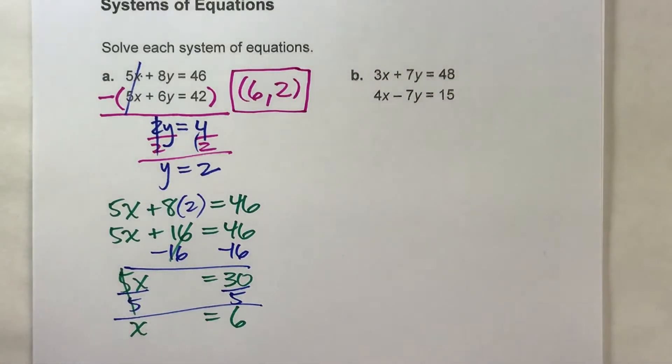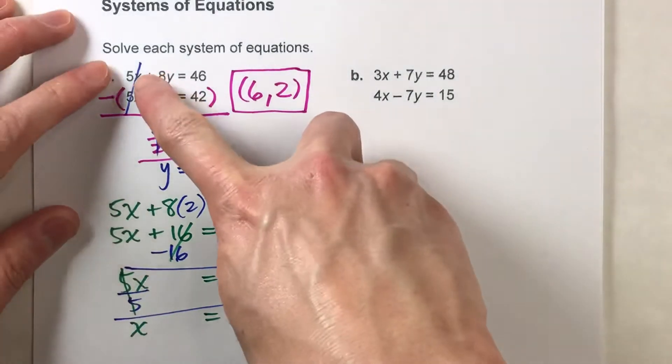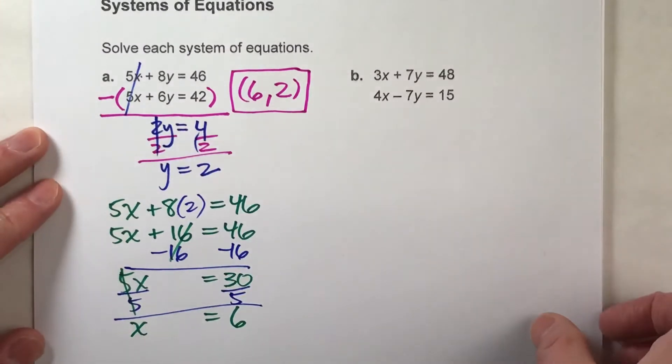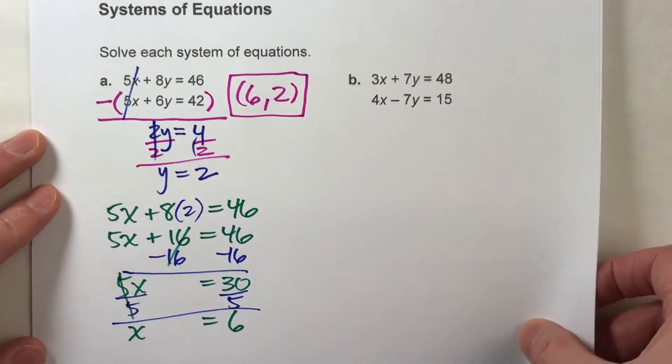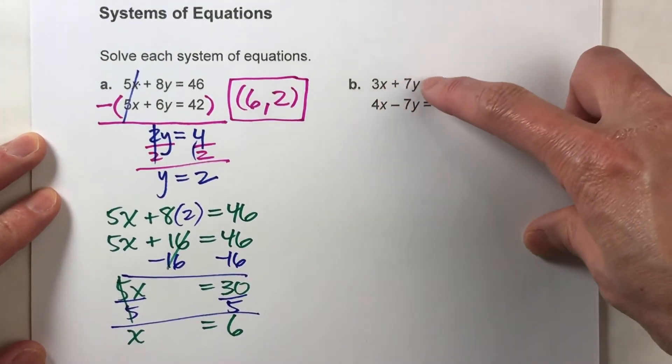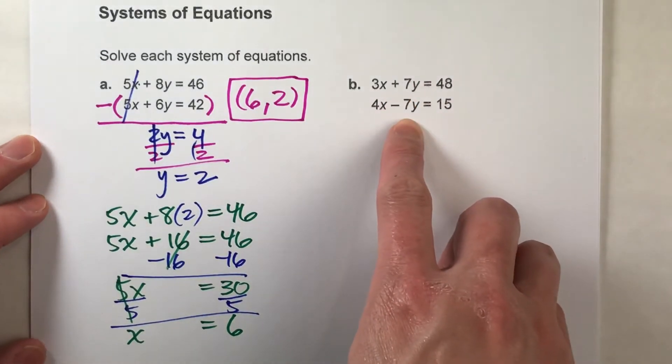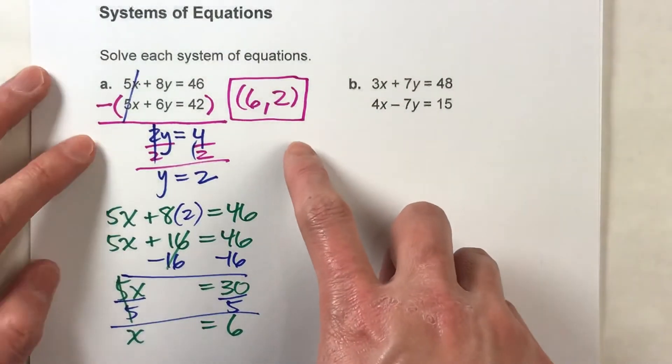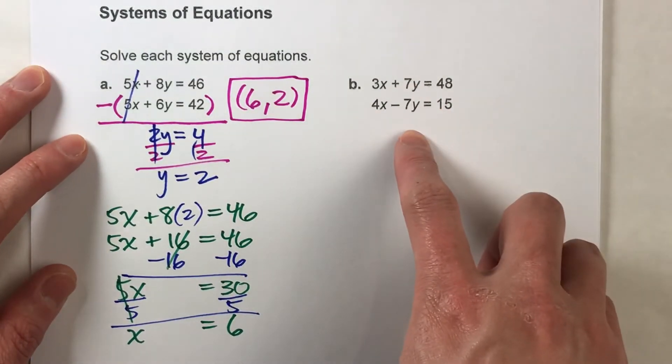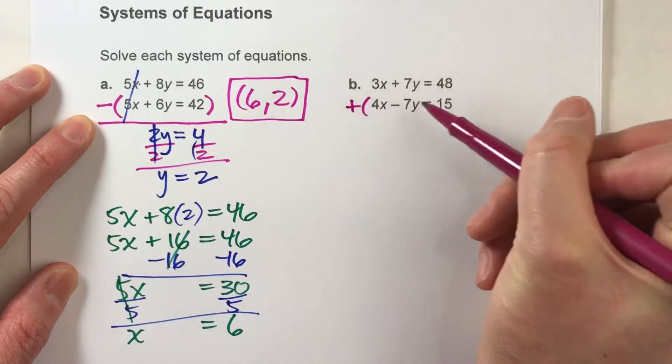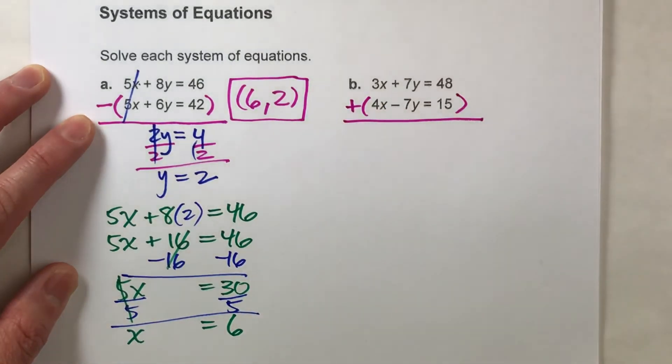So that's the method I would use if the number in front of either the x's or the y's are exactly the same. Now, let me show you what I do if the numbers in front of x's or the y's are the same except opposite signs. For example, positive 7y and negative 7y. It's very similar, but because they have opposite signs, to eliminate them, I'm not actually going to subtract the two equations. Instead, I'm going to add the two equations together. And when I do that, here's what happens.